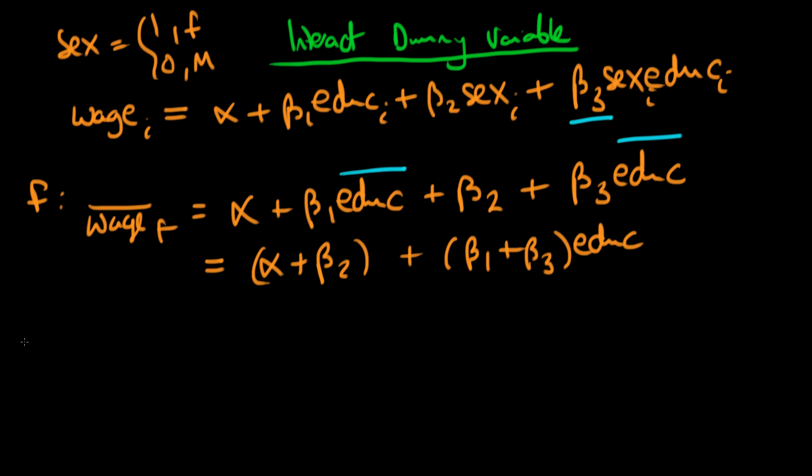So that's for the female case. What do we have for the male? For the males in our sample, the average wage rate is given by alpha plus beta one times the number of years of education, because our sex variable takes on a value of zero, so these second two terms actually cancel or don't exist for the male.